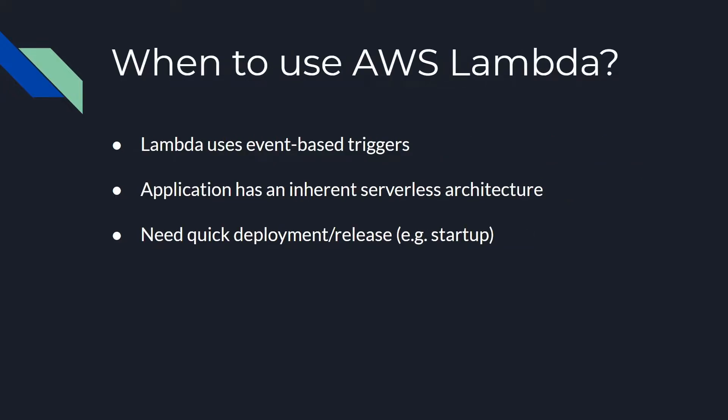Now let's move on to when you'd want to use AWS Lambda. Lambda primarily runs on event-based triggers such as S3, DynamoDB, API Gateway, and many more. If you have an event-based architecture such as setting up a data pipeline, or you want to respond to a client making a request to your API, or you want to process a user's file upload, AWS Lambda enables you to handle all that processing through code. In future videos in this series, we'll be covering the power of different triggers and what you can do with them.